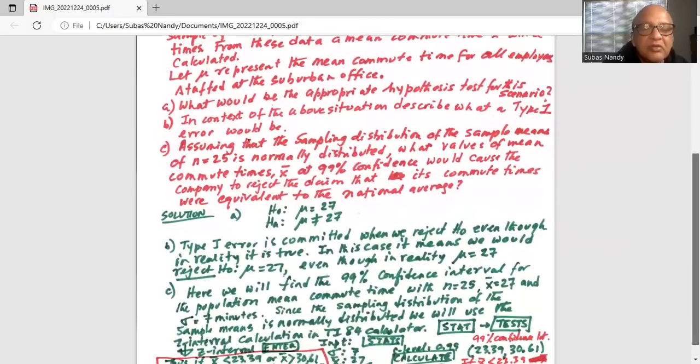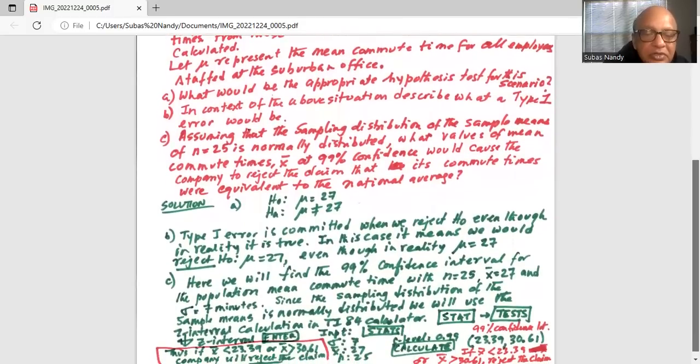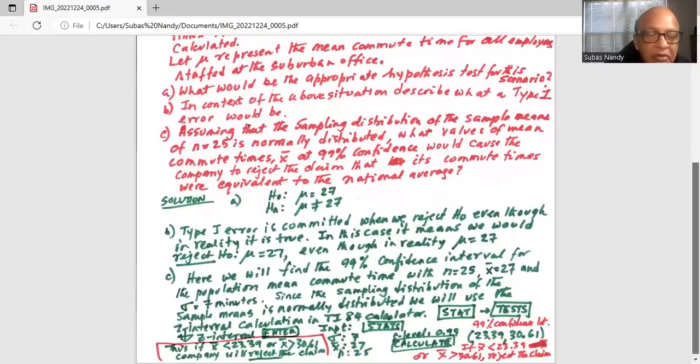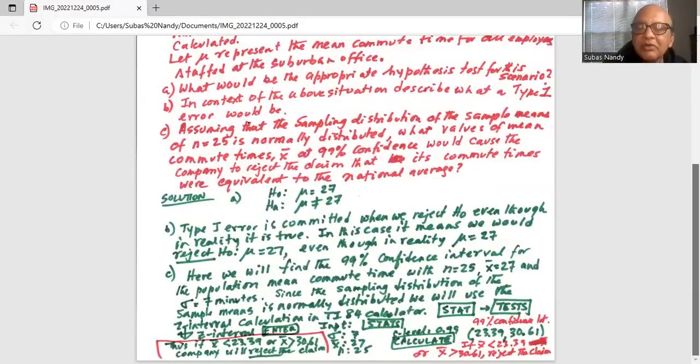Since the sampling distribution of the sample means is normally distributed we will use the z interval because we know the population standard deviation, we know the sample mean, and we know the sample size and it's normally distributed. So we will use the z interval calculation in TI-84 using TI-84 calculator.